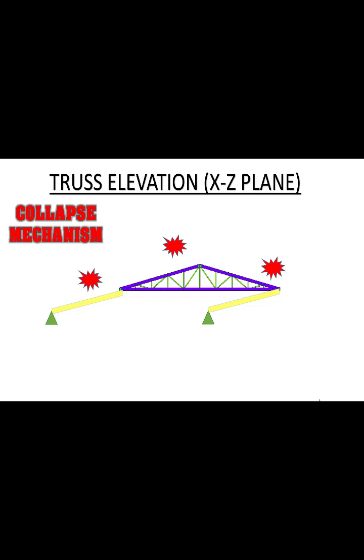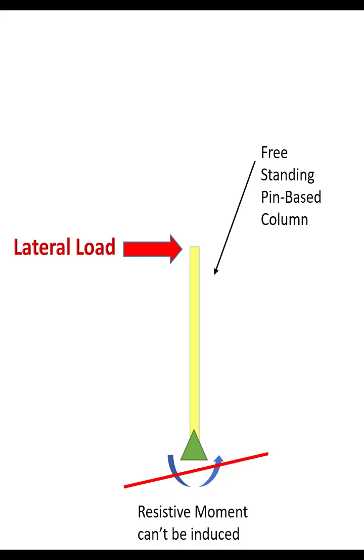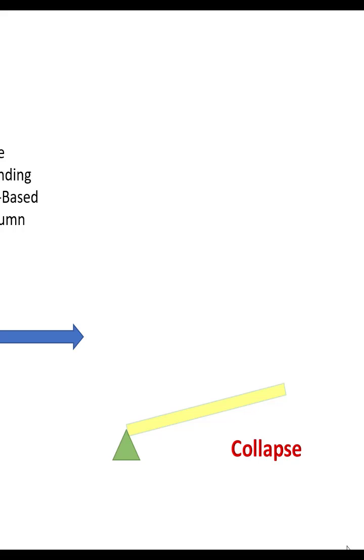Let me tell you the reason behind this. Let's have a freestanding pin-based column. If any lateral load is applied to the free end of this column, then a resistive moment can't be induced at the base, so as a result the column will collapse. This is known as an unstable column.